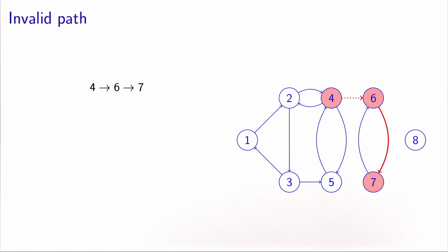Of course, not every path is valid. If I write the path 4, 6, 7, it is not a valid path because the arc 4, 6 does not exist.